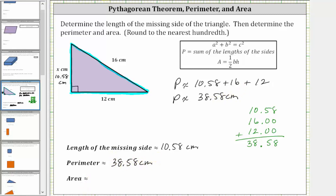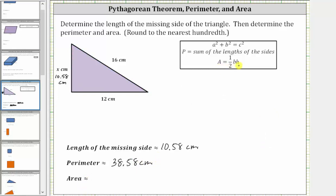And now let's determine the area. The area of a triangle is equal to one-half base times height, where for the given right triangle, the base is 12 centimeters and the height is approximately 10.58 centimeters. And therefore, the area is equal to one-half times 12 centimeters times 10.58 centimeters. And because 10.58 is rounded, let's use the approximate sign here.